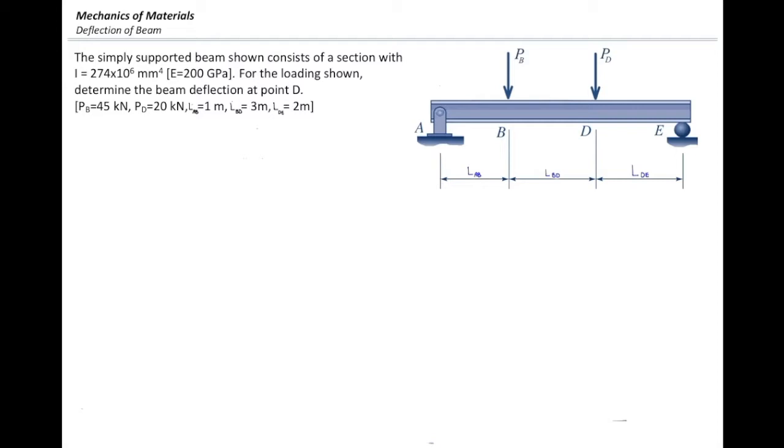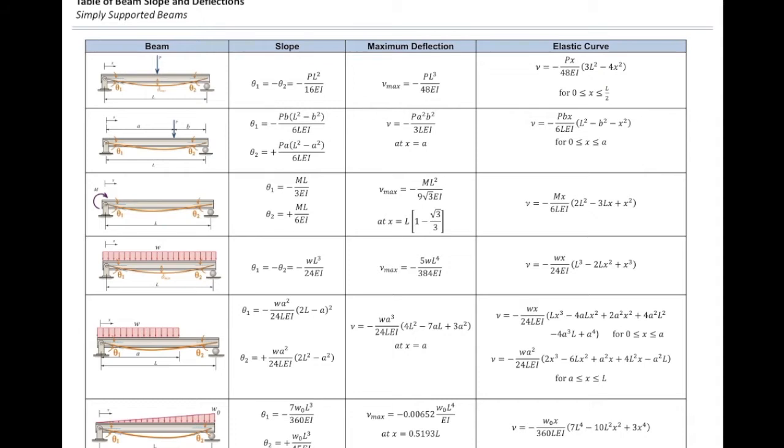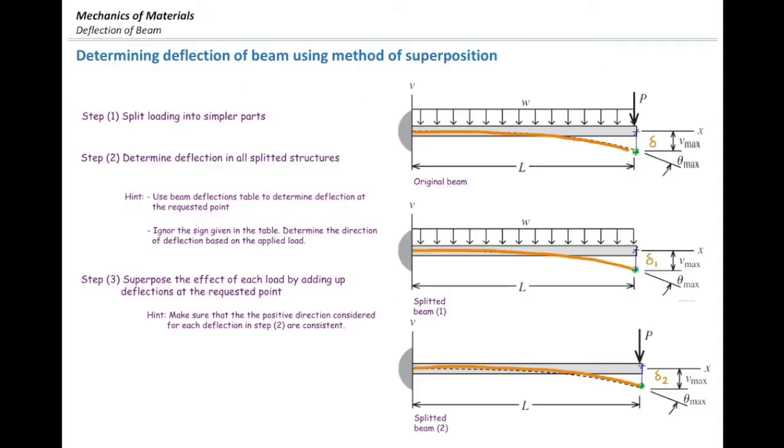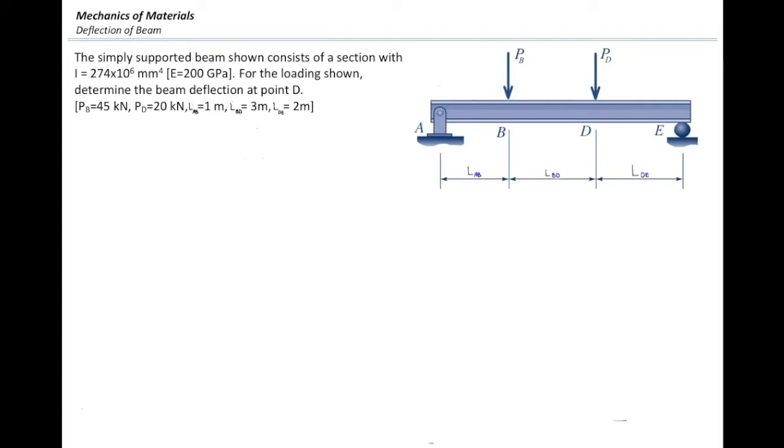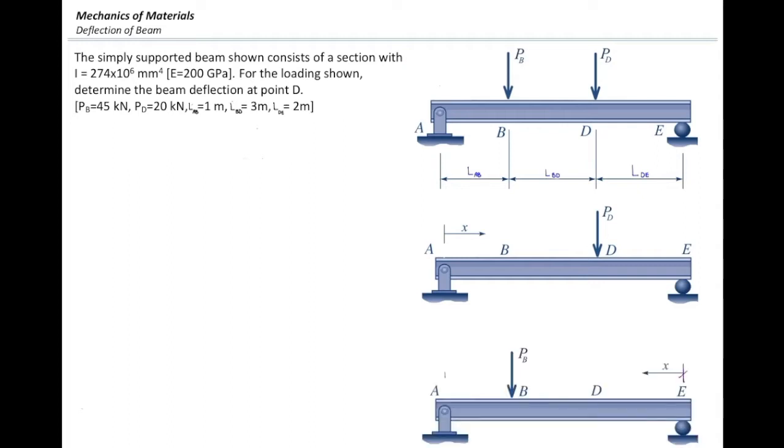Is there any case in the table that has two loadings for simply supported beams? No, but we do have a case that has just one load. So I'm going to get back to this and simplify that by splitting that into two parts. The first beam is the beam subjected to load at D. The other one is the beam subjected to load at B.